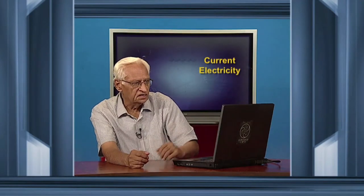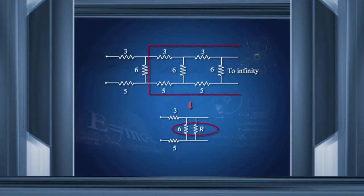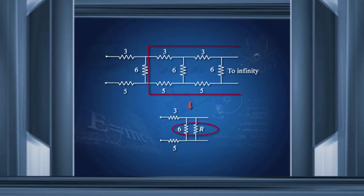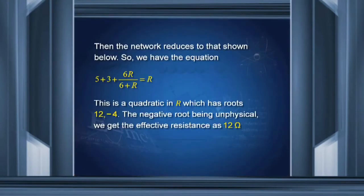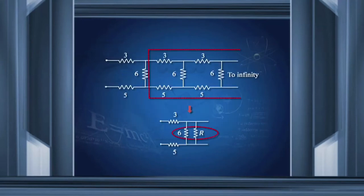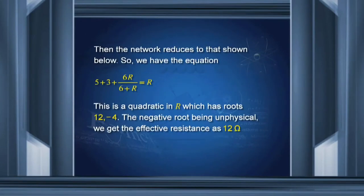Then, if I redraw the circuit, I get this is R. This is in parallel with 6 and then 3 and 5 are here. I will find the effective resistance of these two parallel resistances, which is 1/6 plus 1/R, reciprocal of that, which is 6R/(6 + R). They are now in series. So 5 plus 3 plus 6R/(6 + R) and their value must be equal to R, the infinite network. This is a quadratic equation which you can solve. It has two roots: 12 and minus 4. Minus is of course unphysical because resistance cannot be negative. So we have the resistance of this network equal to 12 ohms.